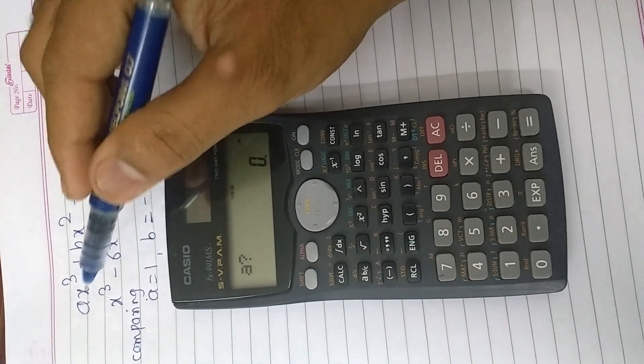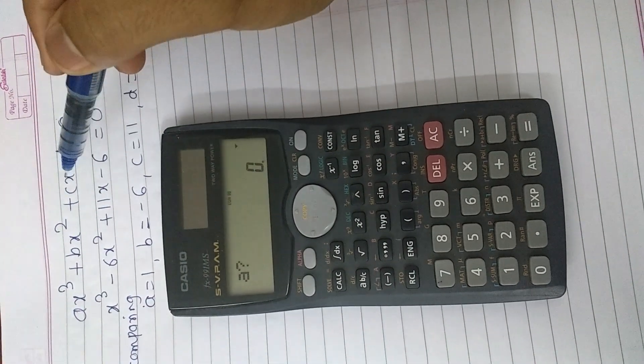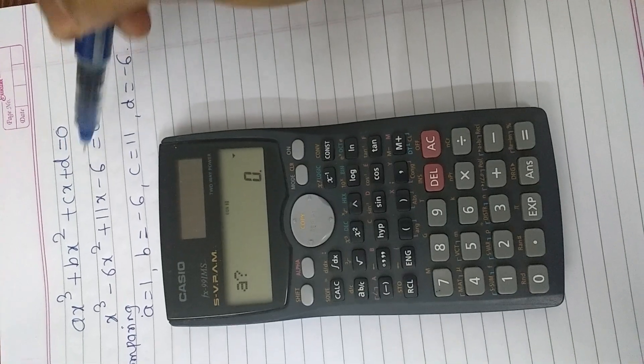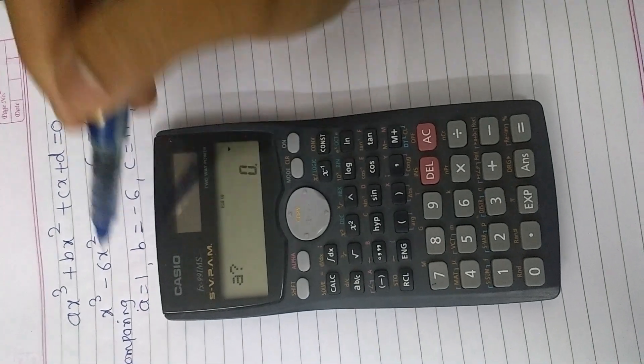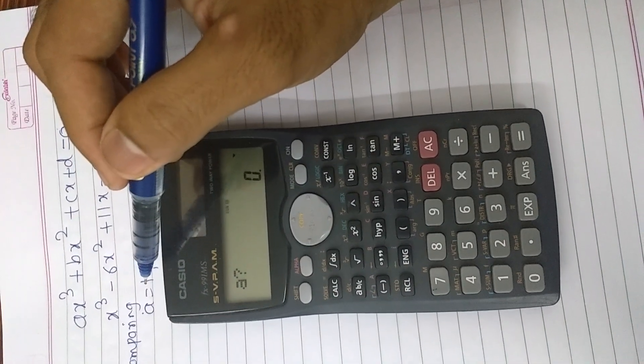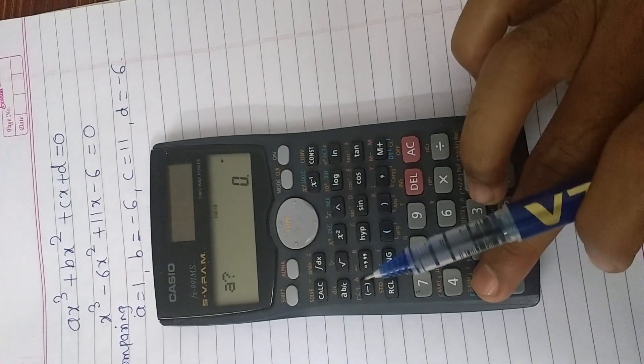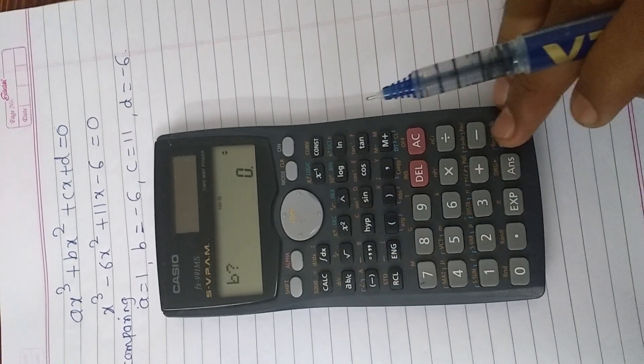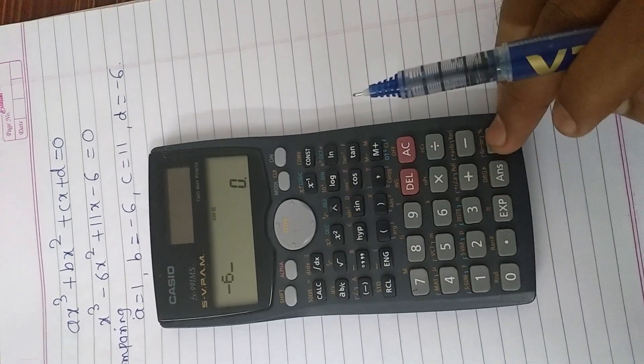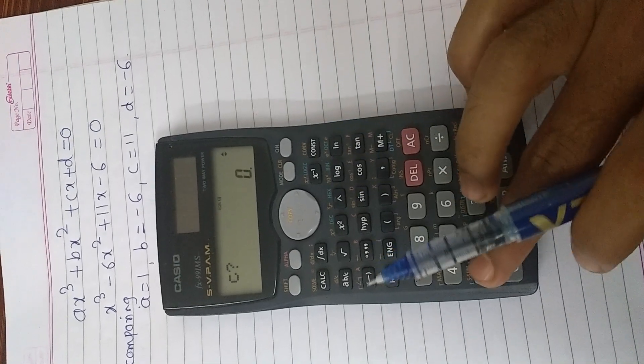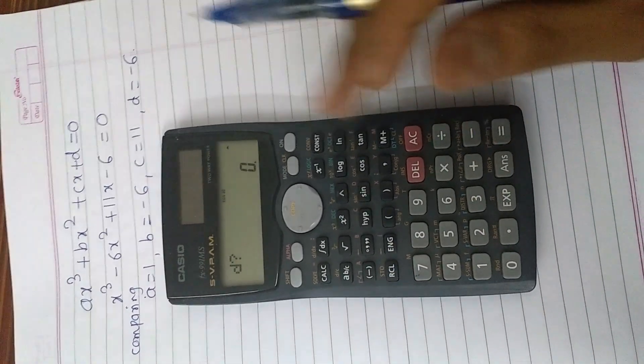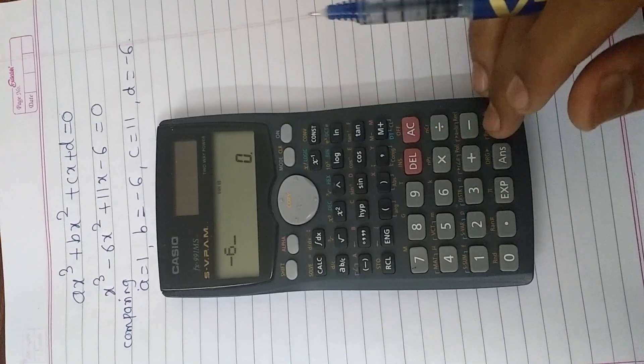Here by comparing we can see a is equal to 1, b is equal to minus 6, c is equal to 11 and d is equal to minus 6. Put all the entries: a is equal to 1, then press equal button, b is equal to minus 6, press equal button, c is equal to 11, press equal button, d is equal to minus 6, press equal button.